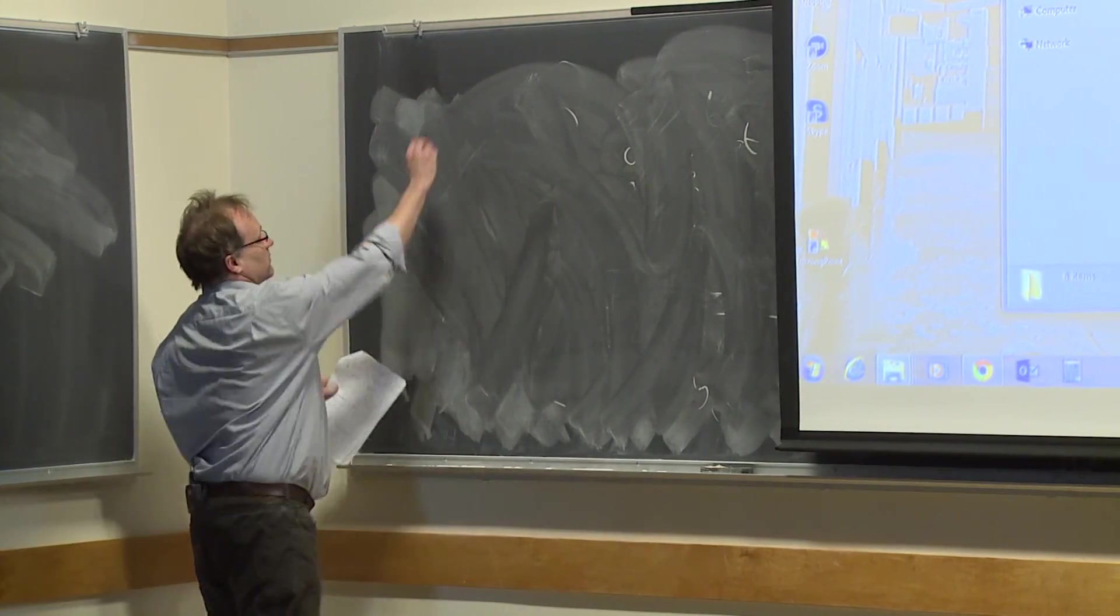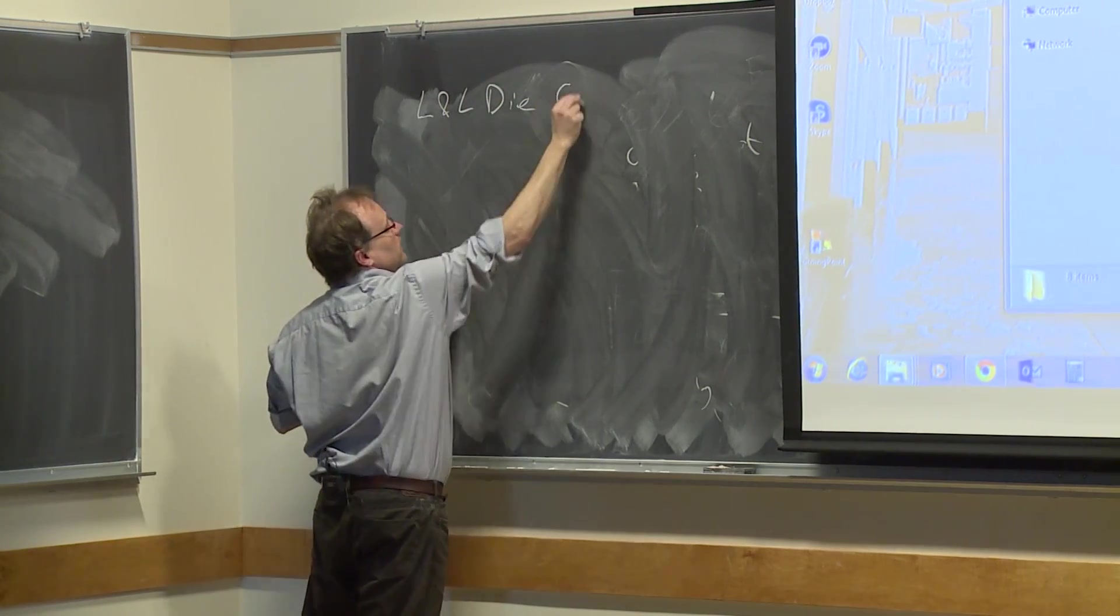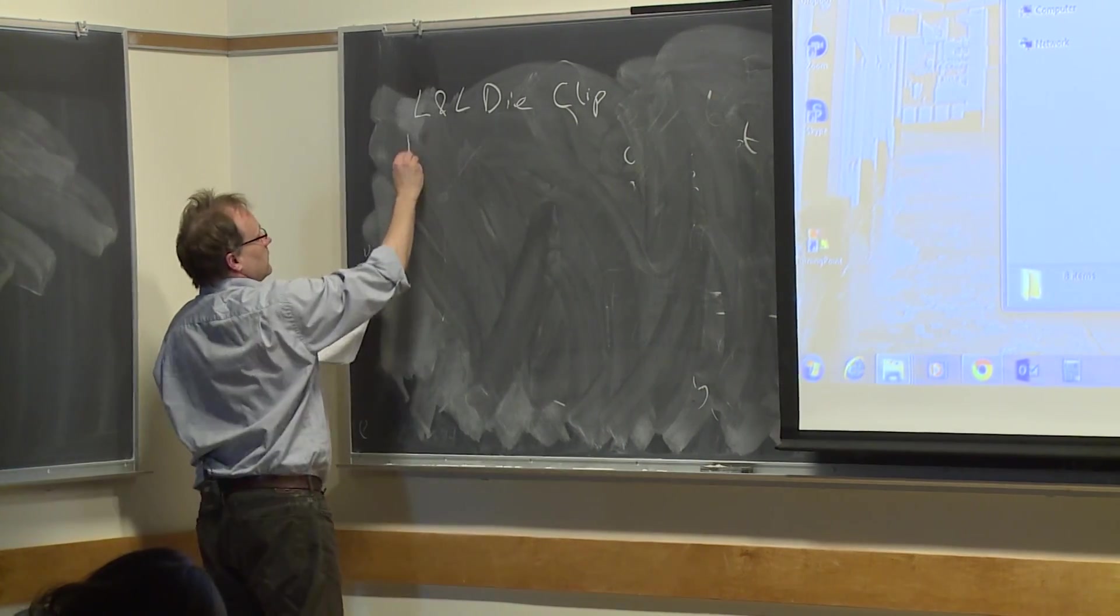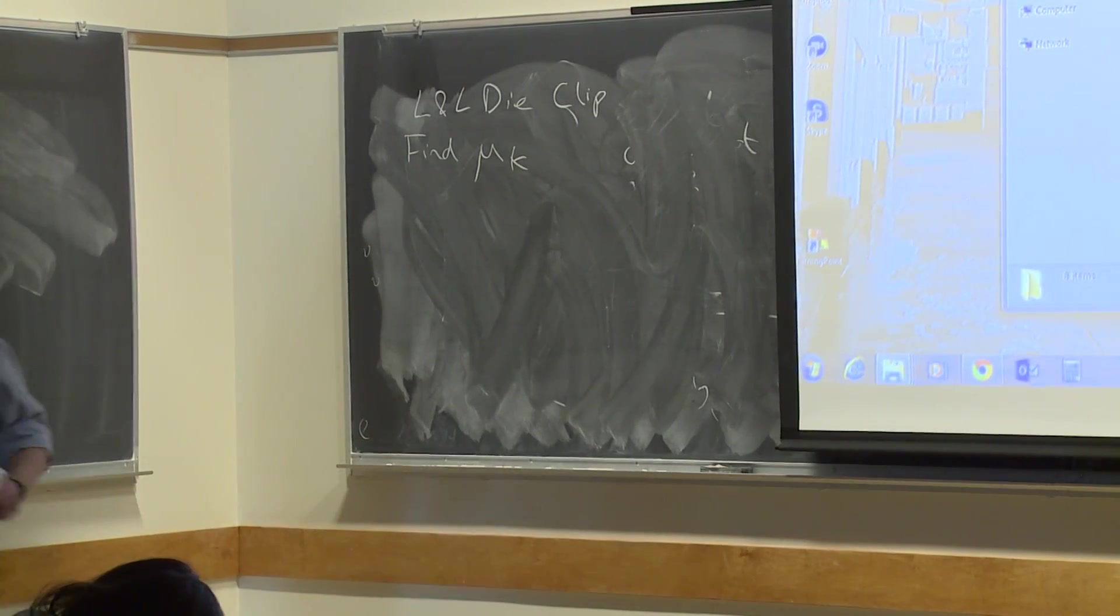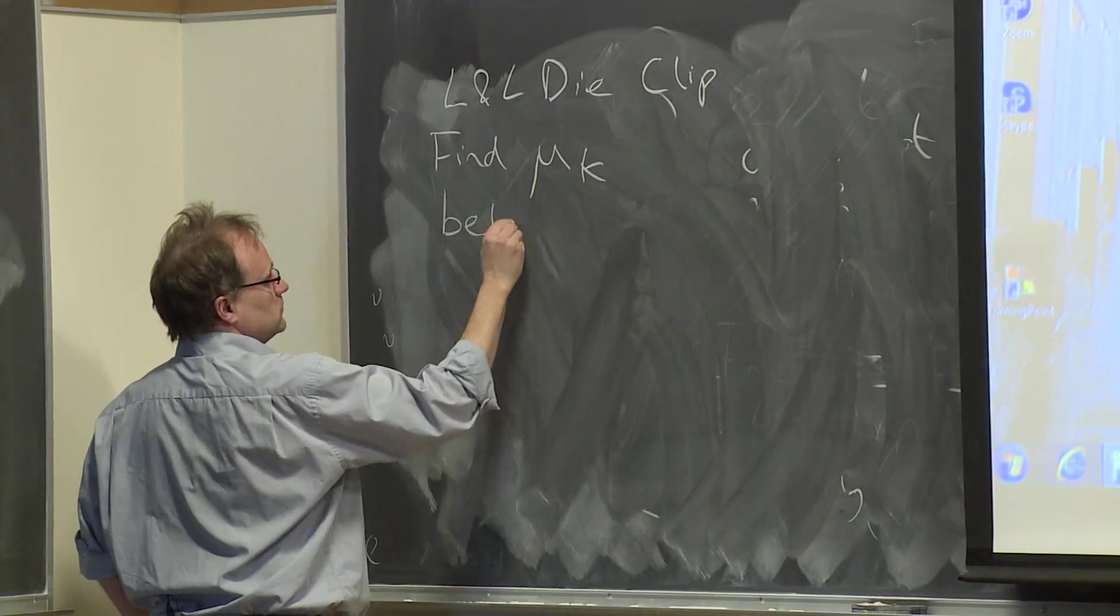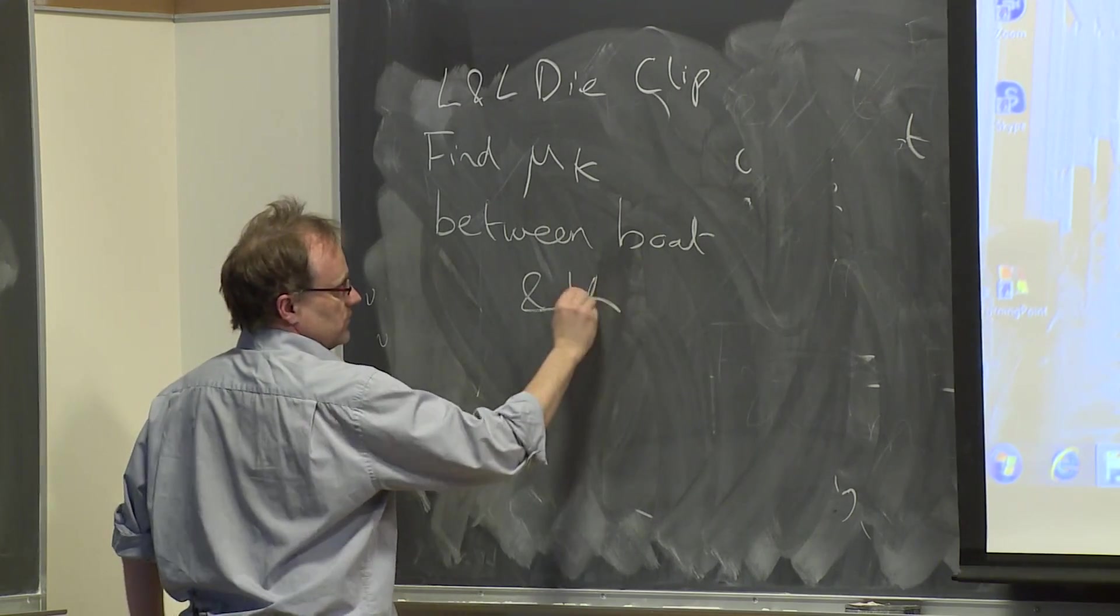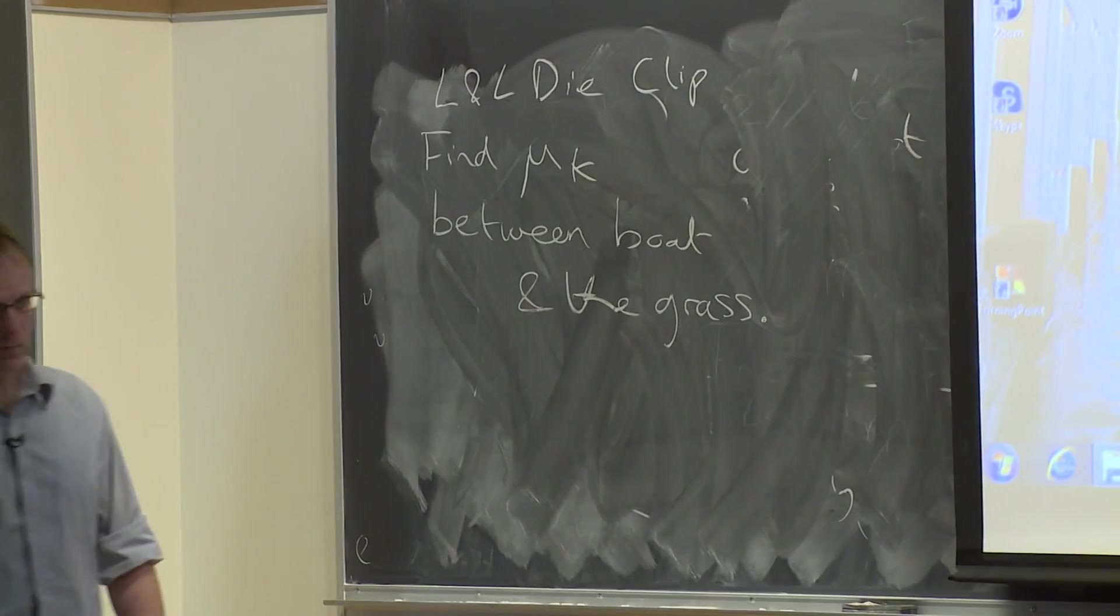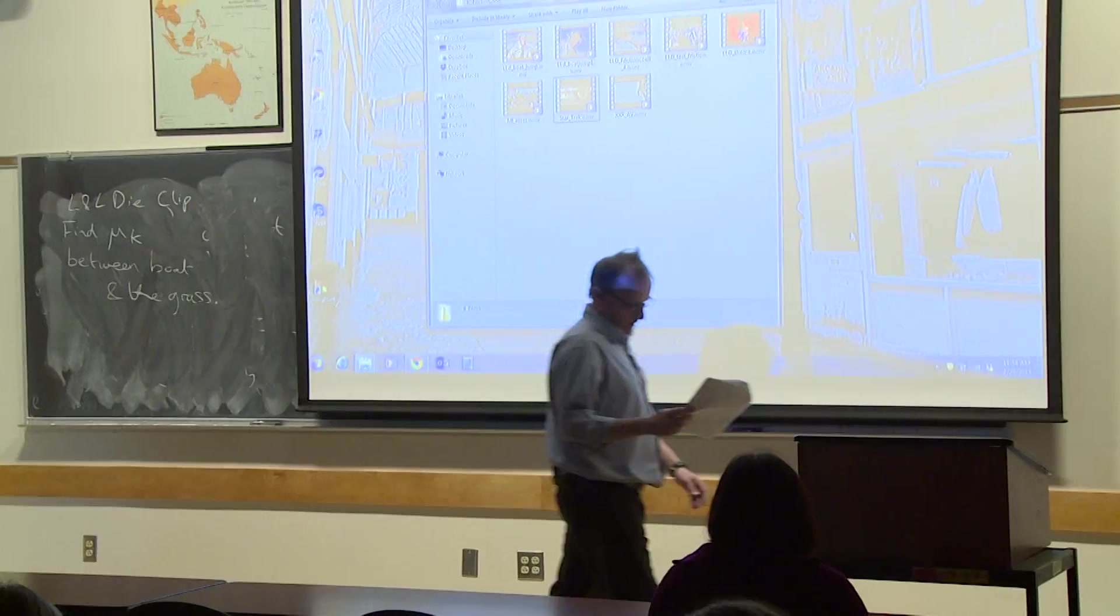So in the following clip, this is the Live and Let Die clip. In the Live and Let Die clip, we want to find the coefficient of dynamic friction μk between the boat and the grass. That's what we're going to try and do - try and find μk between the boat and the grass basically from watching the clip.